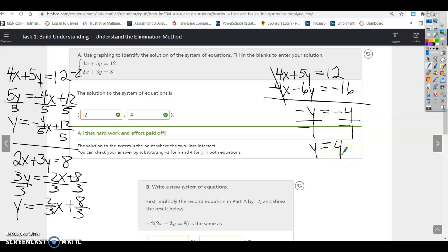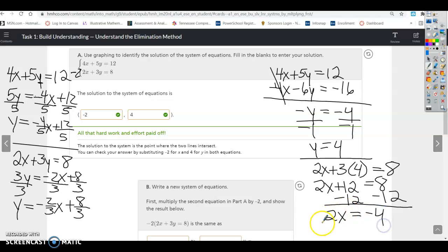And once I find y, then I can plug it into either equation for y and find x. So let's go ahead and do that. So if we've got 2x plus 3 times y, y is 4, equals 8. So I've got 2x. And now I'm going to subtract 12 from both sides. 2x equals negative 4, divided by 2, x is negative 2.